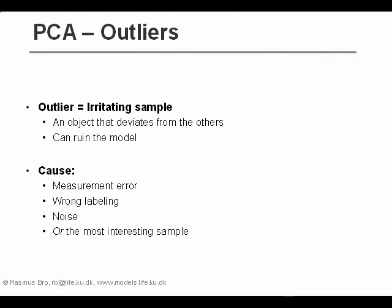The final aspect covered in the PCA course is how to determine outliers. An outlier is simply a sample that's different from all the other ones. The problem with an outlier is that it can disturb the model, make the model irrelevant, ruin the model, or make the interpretation made from the model misleading. The most common cause for an outlier is typically an error, a labeling error, or it could be noise in the data.